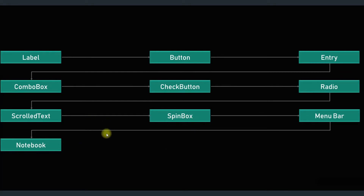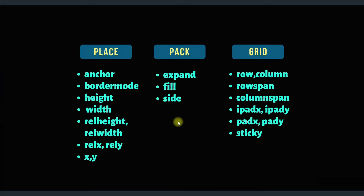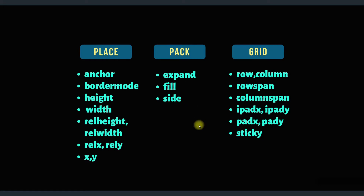TKinter has various widgets including label, button, entry, combo box, check button, radio, scroll, text, spin box, menu bar, notebook, and many more. In this project we'll use label, button, entry, and option menu. To place widgets on the screen there are three ways: place, pack, and grid. In this project we'll use the grid layout.